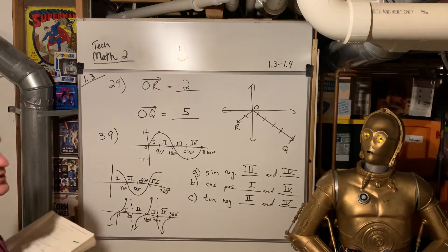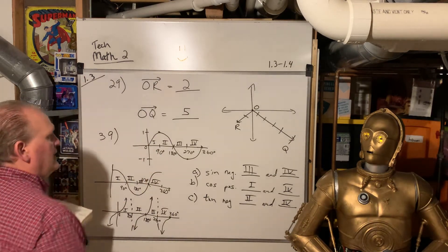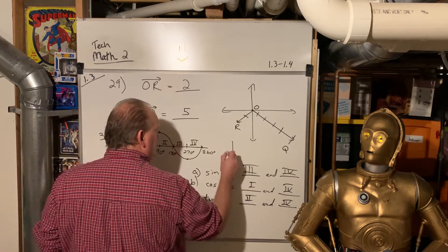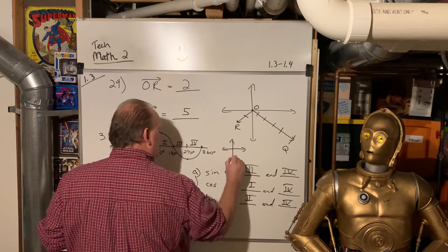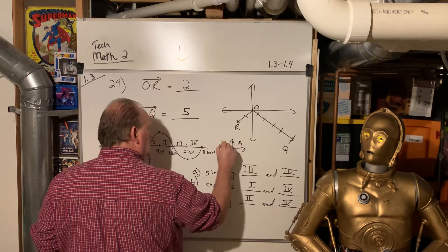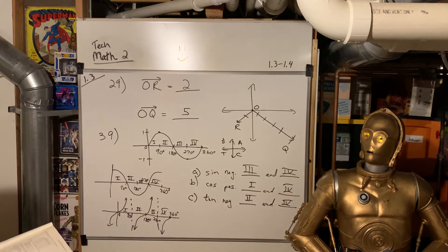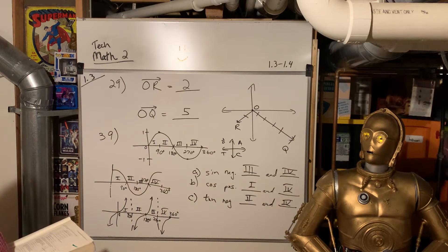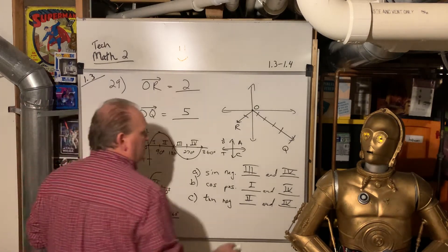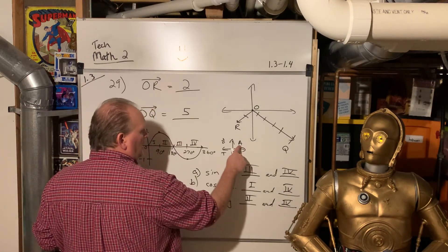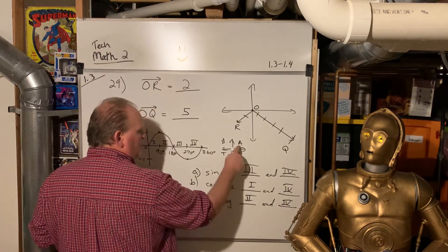Okay. There is a quicker way than graphing it every time and looking at it. There is a mnemonic device, all-star trick class. So what does that mean? All-star trick class isn't what we're trying to memorize. That's what we're using to memorize it. All three of them, sine, cosine, and tangent, are positive.